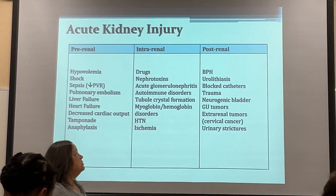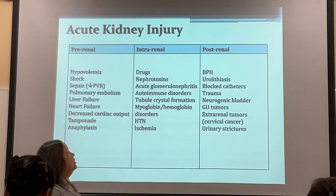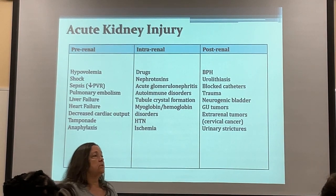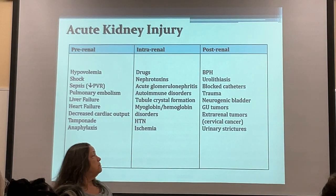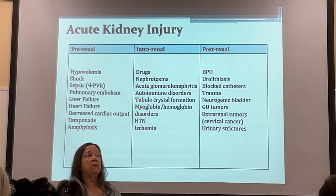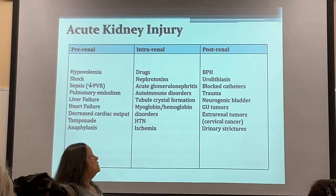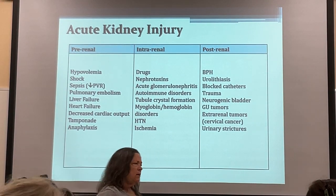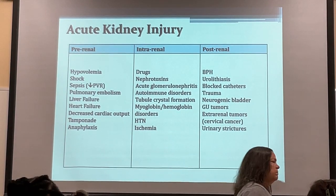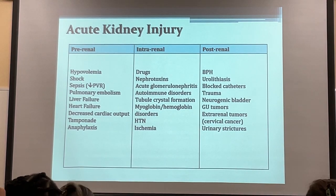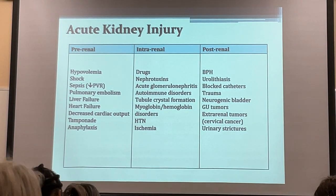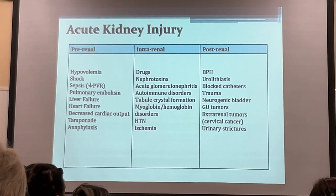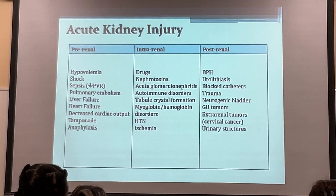GU tumors and extrarenal tumors — cervical cancer, uterine fibroids, ovarian tumors — can all compress the ureters. Urinary strictures are also a cause, sometimes seen in the pediatric population with abnormal ureteral length.